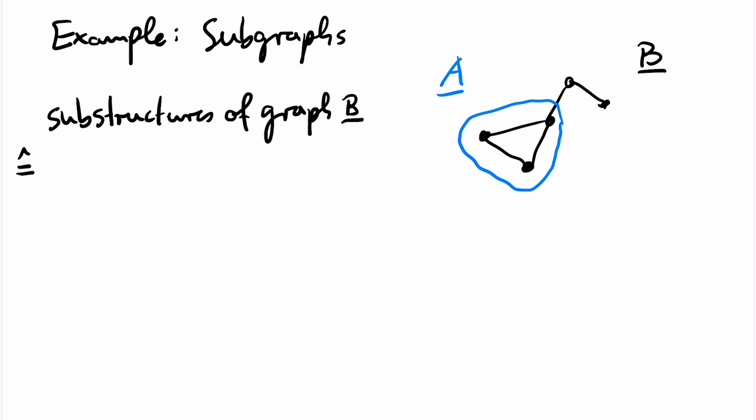Here, we don't have any function symbols in the signature, so every subset of the domain is a substructure. Now, it is important to note that a substructure A of a graph B corresponds to what is called an induced subgraph of B in graph theory.